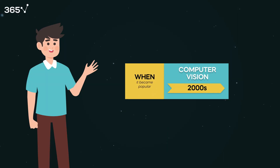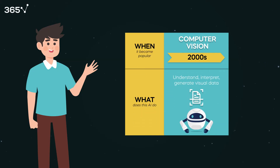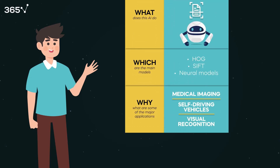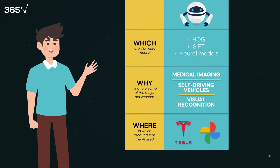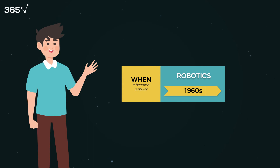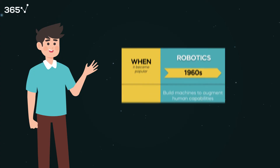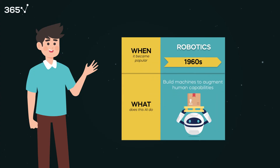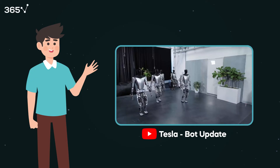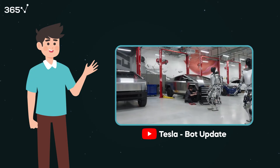Computer vision is another important subfield of AI, allowing machines to see and understand the content of images and video. Within this space, we have object, image, and facial recognition — technology that largely enables Tesla and other automakers to build self-driving cars. Finally, we have robotics, another crucial area where we'll see significant developments in the coming years. Robotics combines engineering and computer science, focusing on the construction and operation of robots — such as the humanoid TeslaBot.